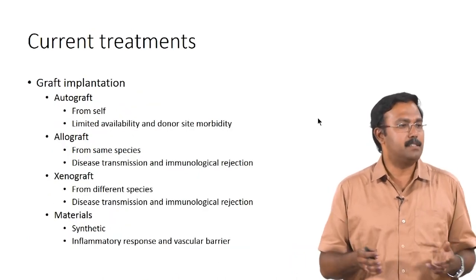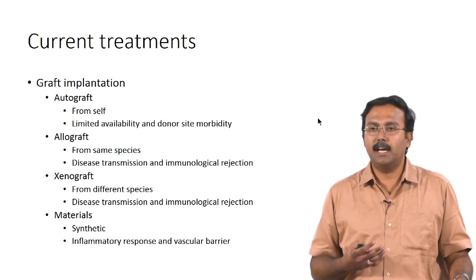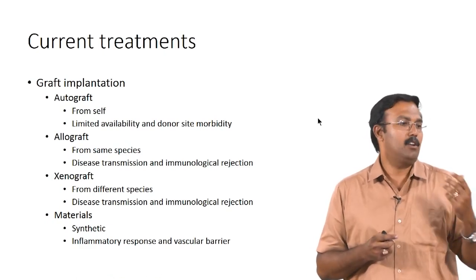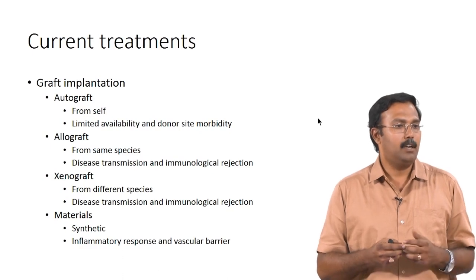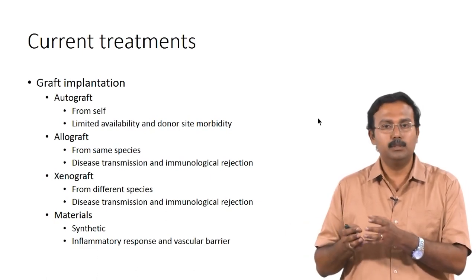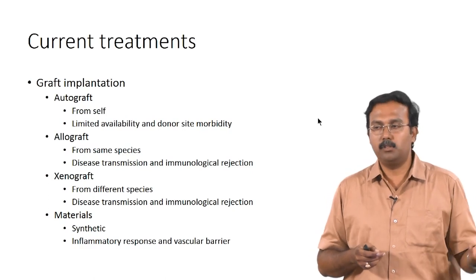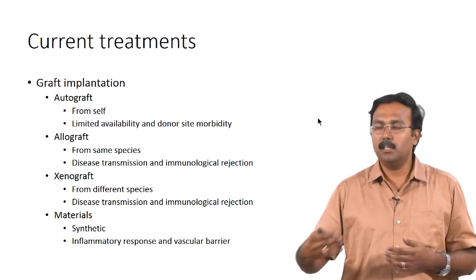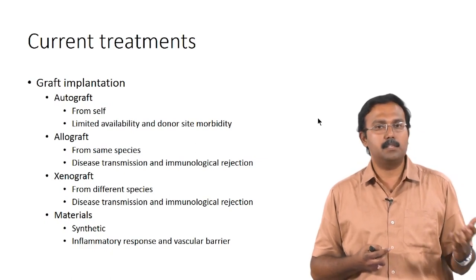Currently, people do treat damaged tissues. There are different techniques you can use. Graft implantation is basically the approach, and there are different types of grafts. You can have an autograft, which is basically from yourself — the advantage is it will not get rejected because it is part of your own body, but the problem is there is very limited availability. You cannot completely harvest a particular tissue, and if it is an organ like the pancreas, you do not have another one to take from your own body. So you need to get it from an allograft — another person from the same species. Here there is a risk of disease transmission and rejection, even though availability is higher.